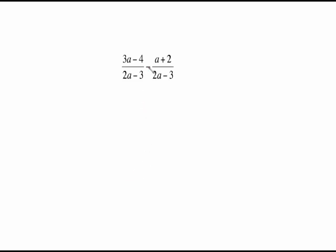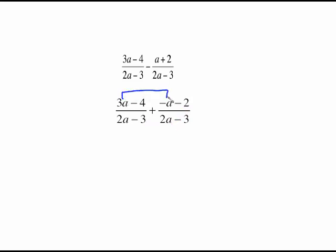Now this is where you really need to be careful with the minus in front of the fraction. The minus distributes through the whole numerator, so change this to plus a negative and distribute the negative all the way through the top. A positive a becomes negative a, and a positive 2 becomes negative 2. Keep the common denominator and combine like terms: 3a and negative a combine, and negative 4 and negative 2 combine to give us 2a minus 6.